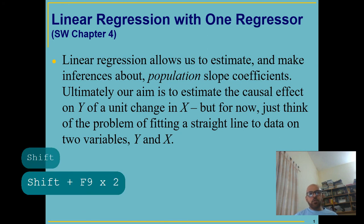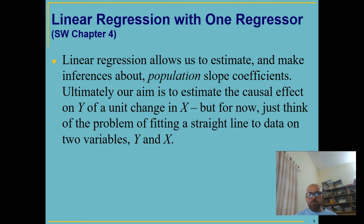Welcome to Chapter 4: Linear Regression with One Regressor. In this chapter we are going to discuss population regression function, sample regression function, how to estimate the population regression function, what is ordinary least squares, what does least squares mean, why we should not have outliers in our data and if there are outliers why OLS leads to biased results, and the sampling distribution of OLS estimators.